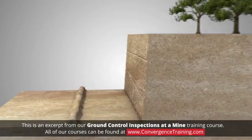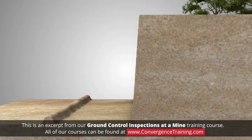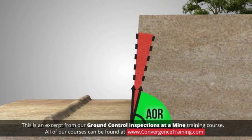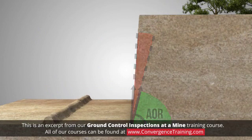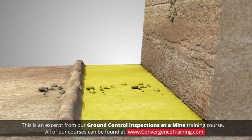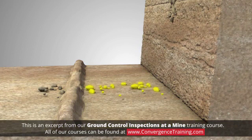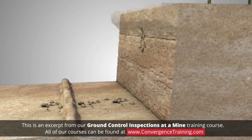Inspections should watch for and record signs of slopes or wall angles that exceed the material's angle of repose, drop zones and slide barriers at the base of high walls where fallen material has collected or breached, and areas showing signs of instability or potential failure.